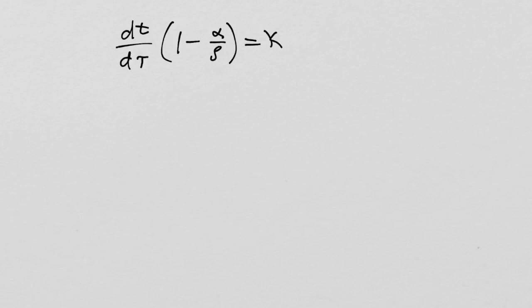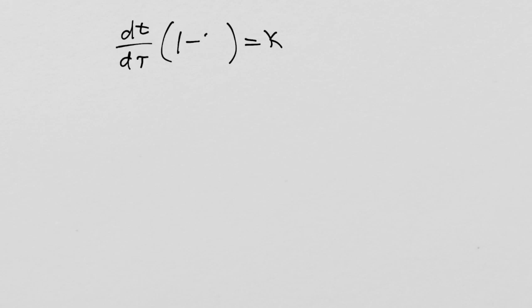Let's start with dt/dτ, parameterizing the path using proper time. From the constants of motion, we have (1 - α/ρ) × dt/dτ = κ. Since α/ρ = 1/ρ* = χ, we get (1 - χ) × dt/dτ = κ, so dt/dτ = κ/(1 - χ). This shows how important constants of motion are — I can now substitute what I just wrote for this term when λ is taken to be proper time τ.